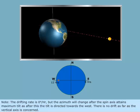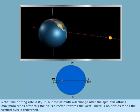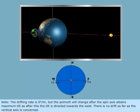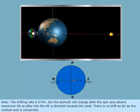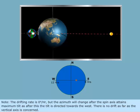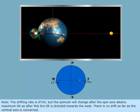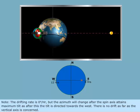Note, the drifting rate is 0 degrees per hour, but the azimuth will change after the spin axis attains maximum tilt, as after this, the tilt is directed towards the west. There is no drift as far as the vertical axis is concerned.